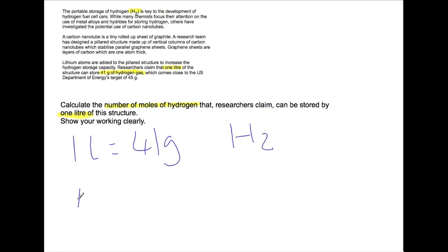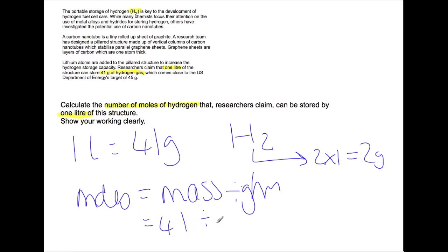So to be able to get moles we need to do mass divided by gram formula mass. So with hydrogen being H2 that is 2 times 1 which is 2 grams. So we are going to do 41 divided by 2 to give us 20.5 moles.